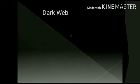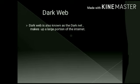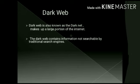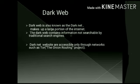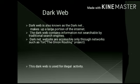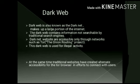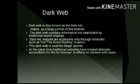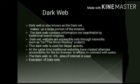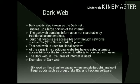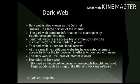Next is the Dark Web, also called the Dark Net. It is not openly accessible on the normal internet — it requires a particular special browser to access. It occupies about 6% of the internet. It is used for illegal activities. Examples include Silk Road and various illegal political processes, as well as smuggling and other criminal activities.